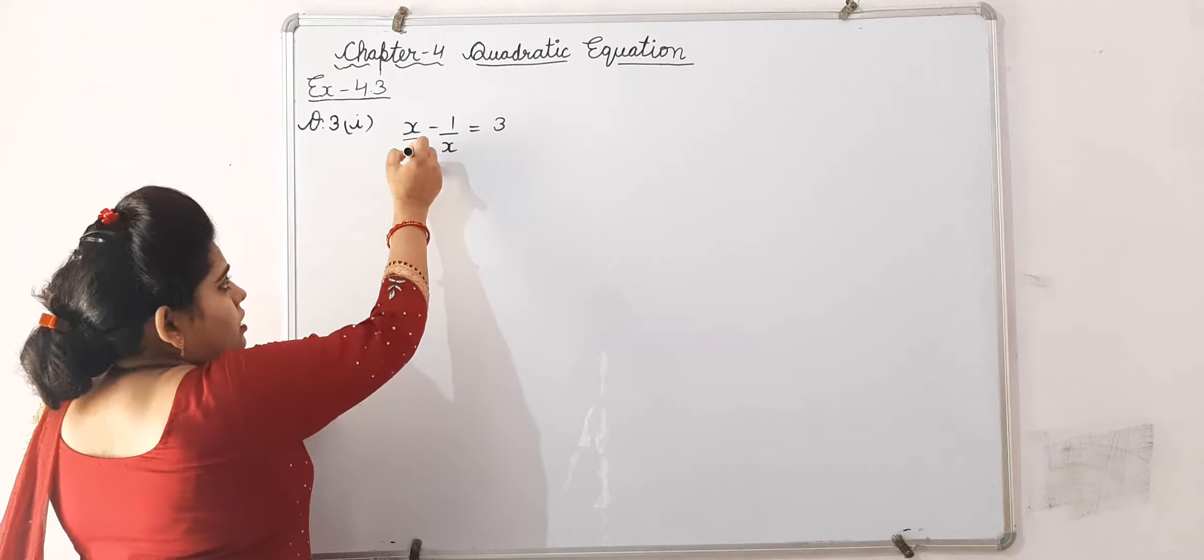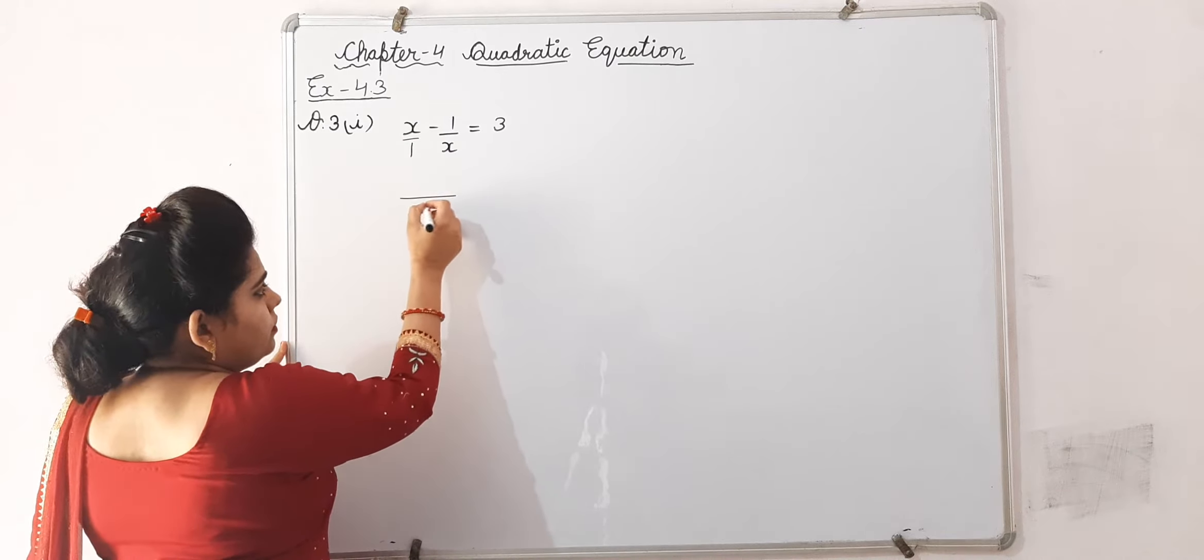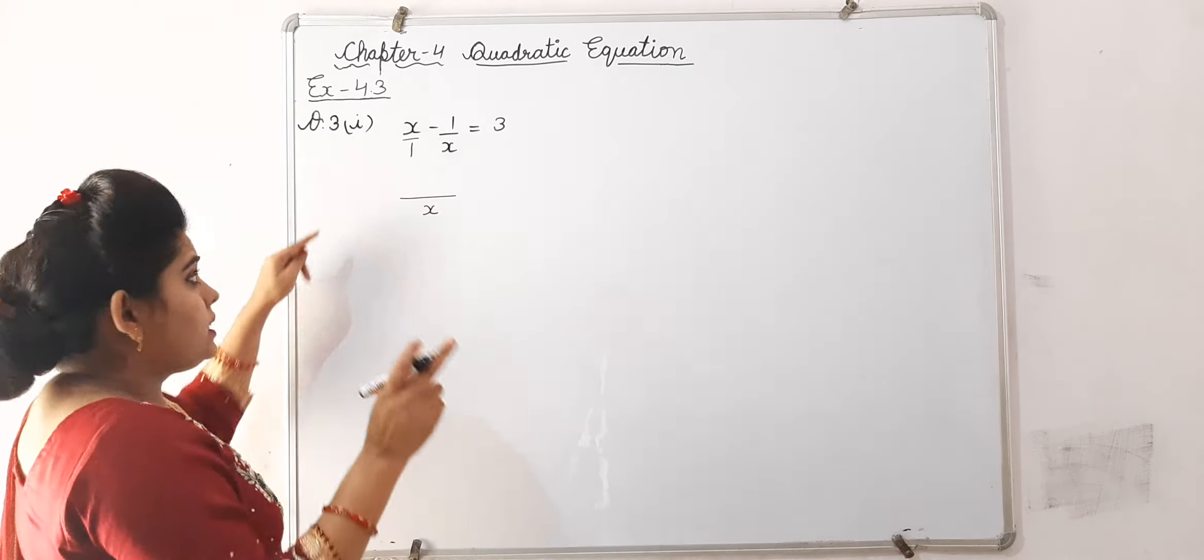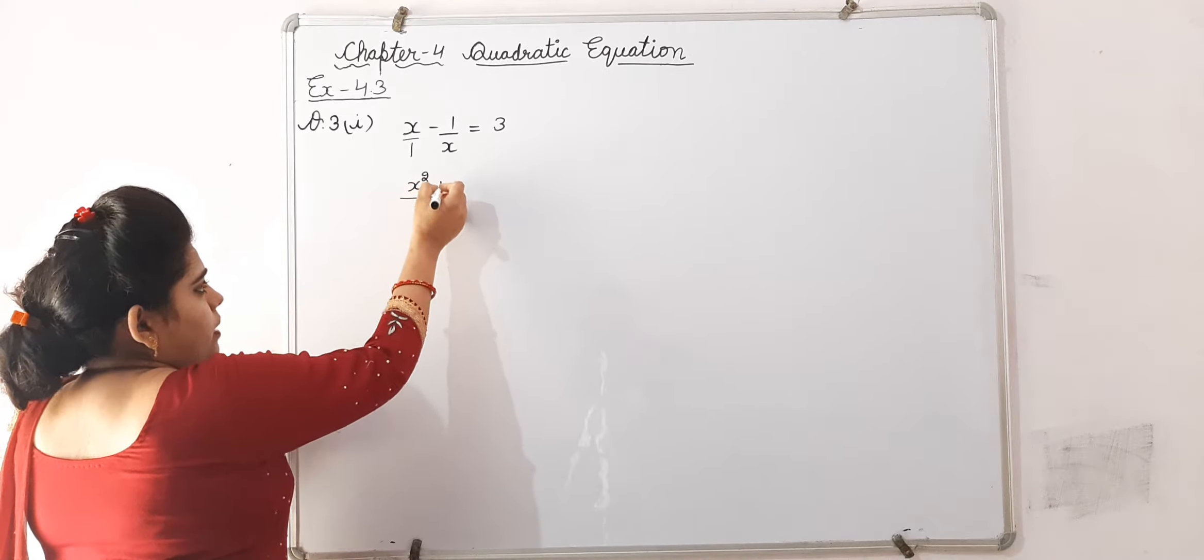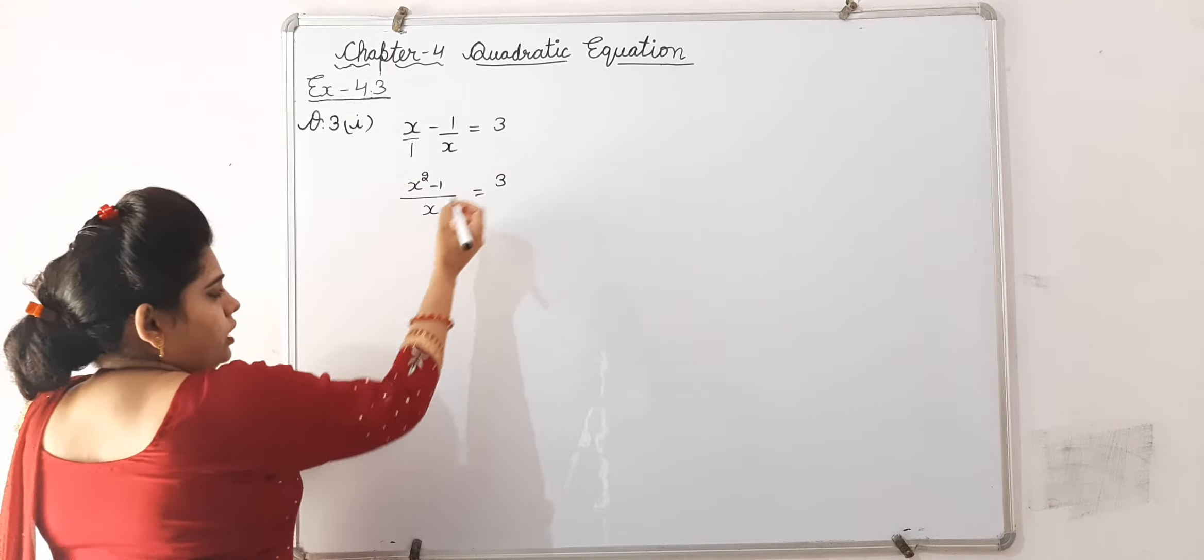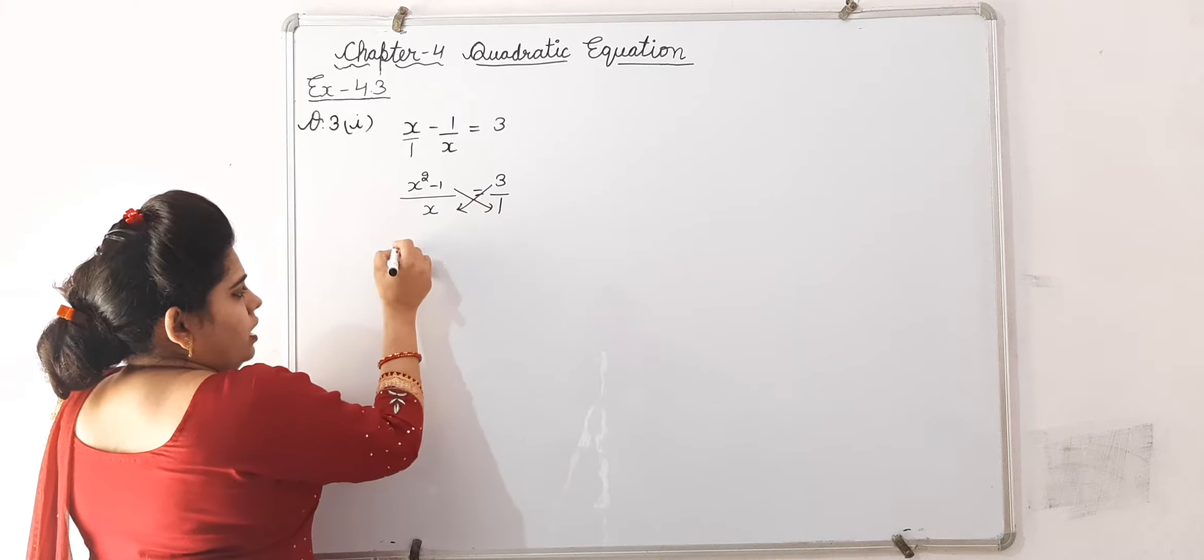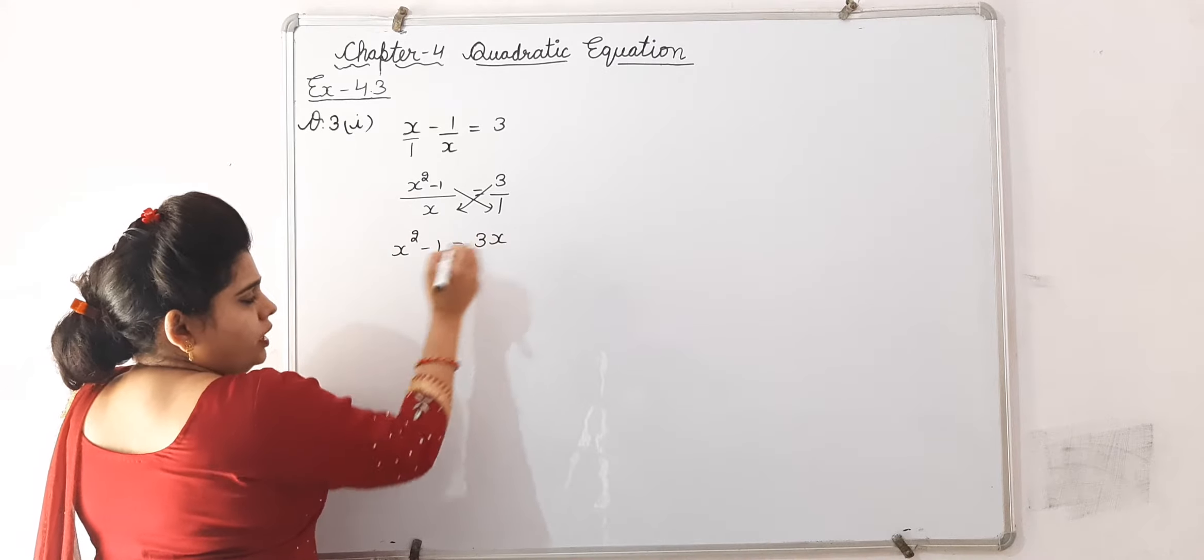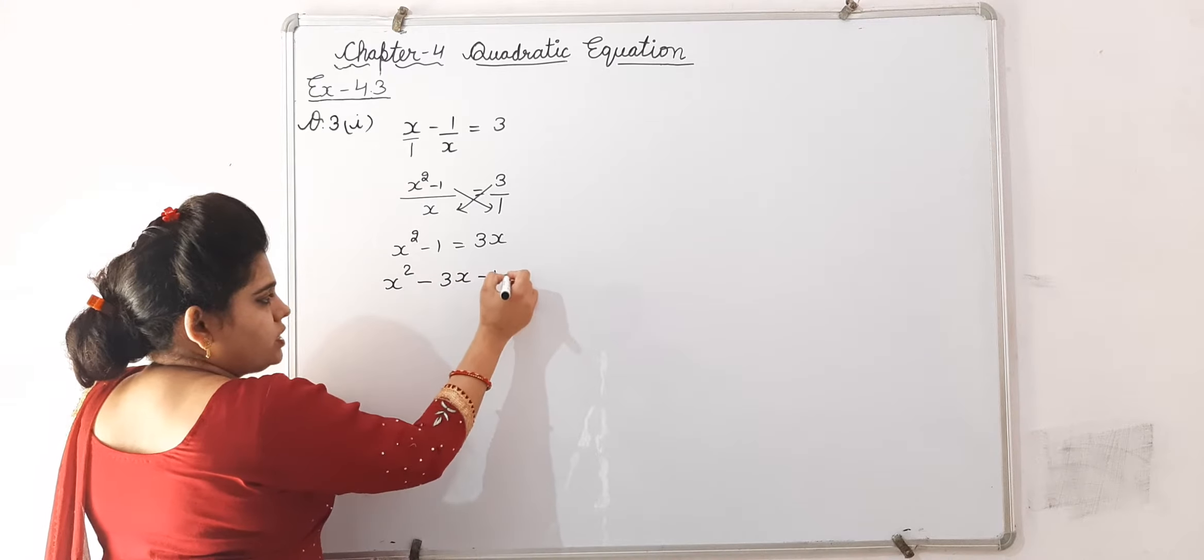It is given that it can be written as x by 1. The LCM of 1 and x will be x. x divided by 1 x, x into x is x square, and here minus 1 is equal to 3. Then by cross multiplying,